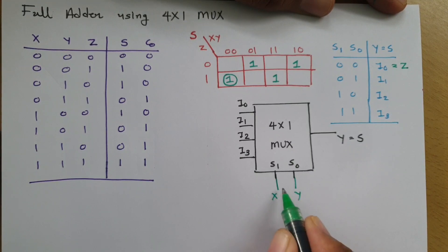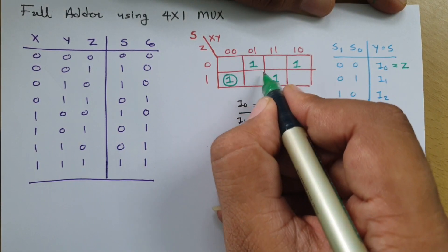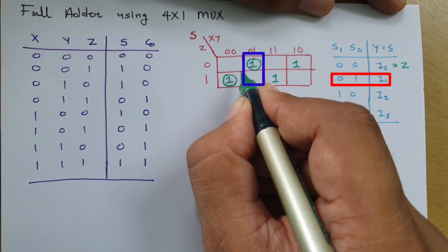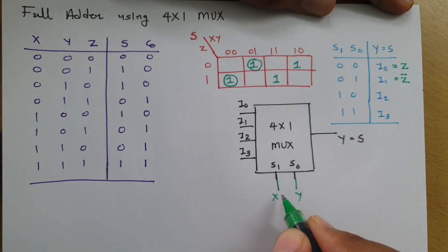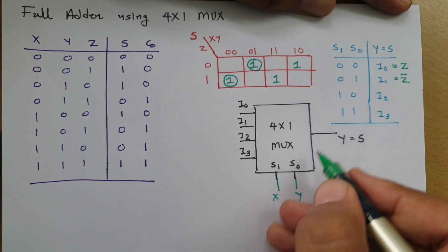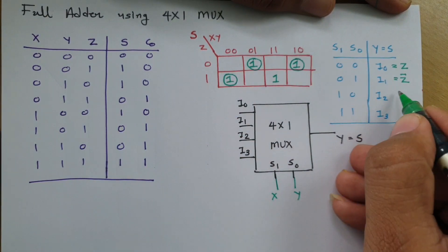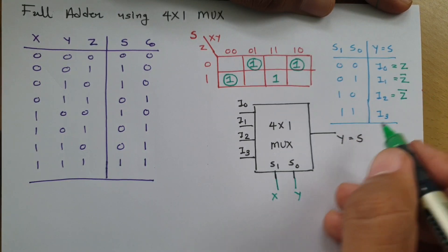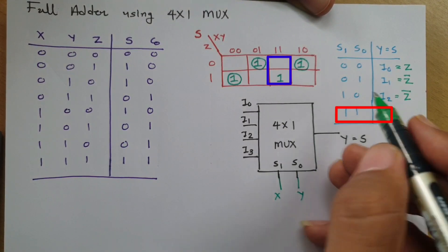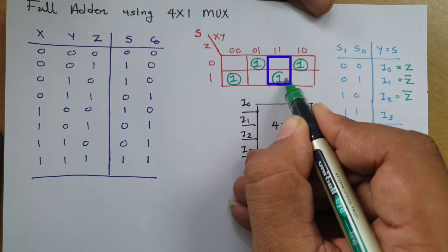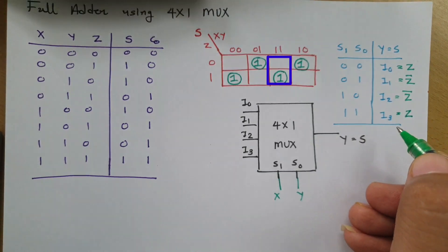When x and y are 0,1 — S1,S0 is 0,1 — I1 gets selected. For the K-map box at x=0, y=1, the value is z-bar, so I1 equals z-bar. When x and y are 1,0, I2 gets selected, and the K-map solution for that box is again z-bar, so I2 equals z-bar. When x and y are 1,1, I3 gets selected, and the K-map solution at that box gives z equals 1, so I3 equals z.